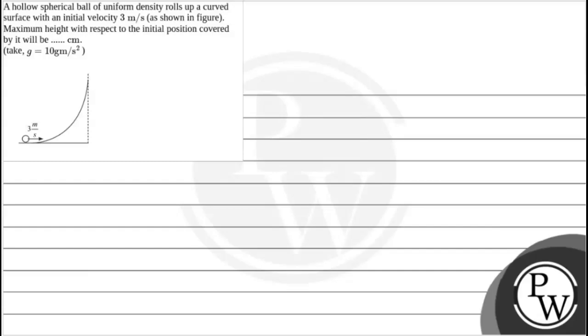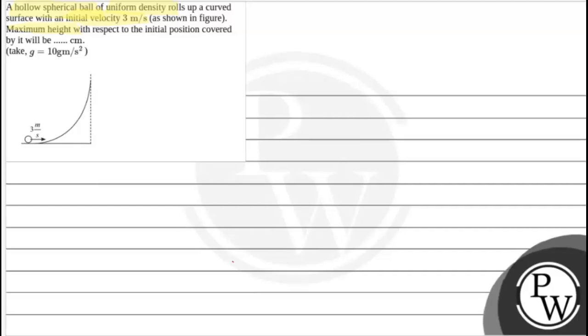Hello, let's read the question. The question says a hollow spherical ball of uniform density rolls up a curved surface with an initial velocity of 3 meter per second as shown in figure. Maximum height with respect to the initial position covered by it will be. First, the key concept is conservation of mechanical energy.